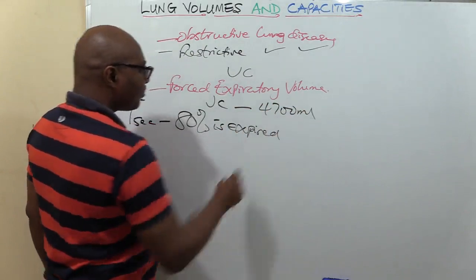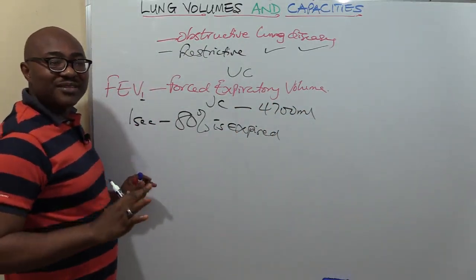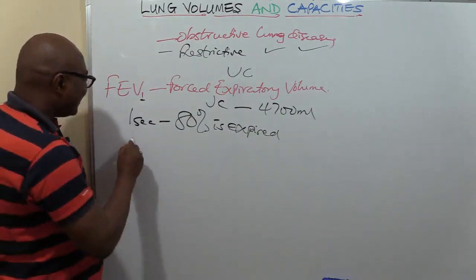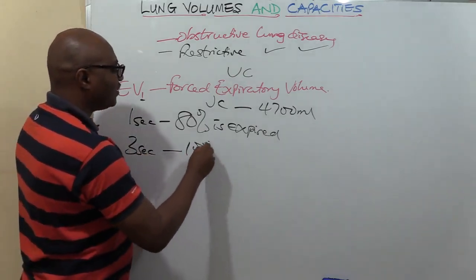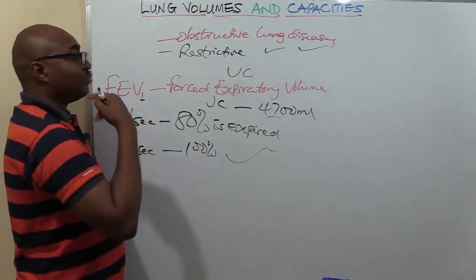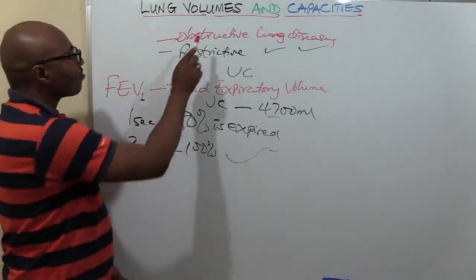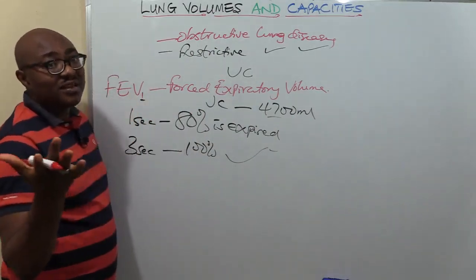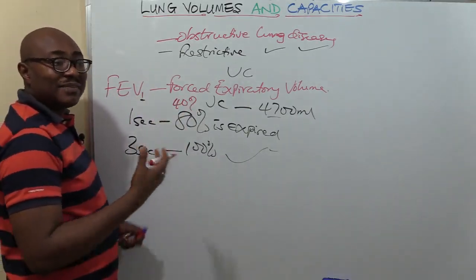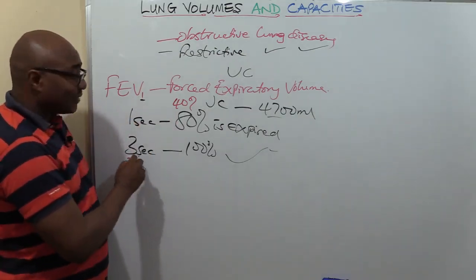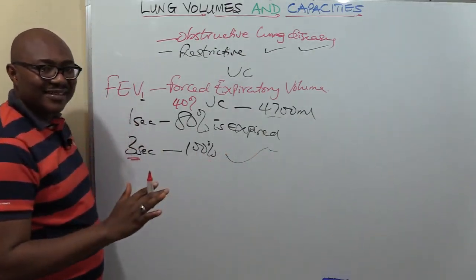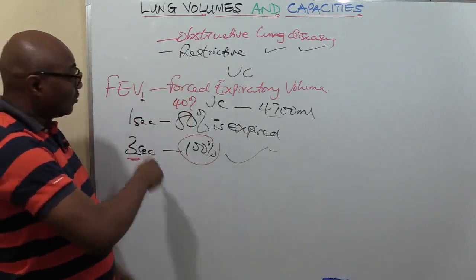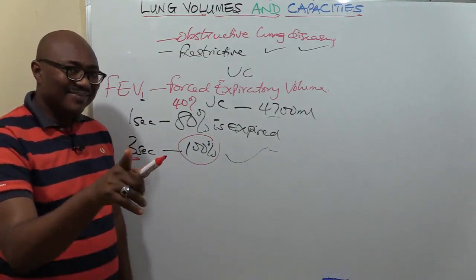In the third second, you've expired 100% — so within three seconds you should be able to expire the full vital capacity of 4,700 ml. But if you have asthma or another obstructive disease, depending on severity, you might expire only 40% in the first second. And instead of three seconds, it can take six to seven seconds to expire everything. So if within three seconds you cannot expire your full vital capacity, there is a problem.